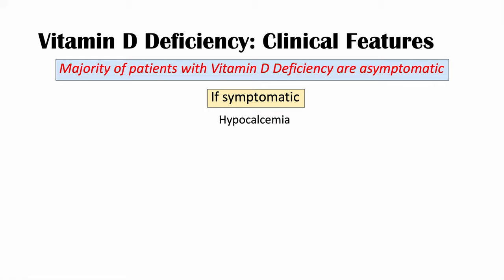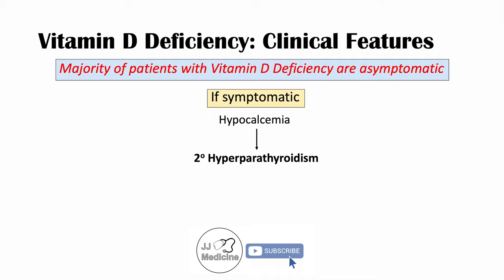A hypocalcemic state leads to an upregulation of the activity of the parathyroid glands, leading to secondary hyperparathyroidism. Because there's not enough vitamin D or calcitriol around to absorb calcium from the gastrointestinal system, we get low levels of calcium. Calcium normally prevents the release of parathyroid hormone, so low calcium leads to an upregulation of parathyroid hormone release — this is secondary hyperparathyroidism.